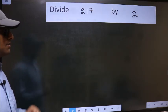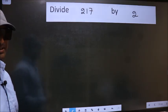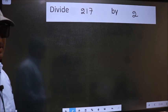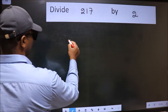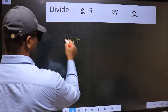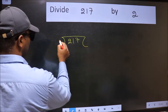Divide 217 by 2. To divide this, we should frame it in this way. 217 and 2 here.